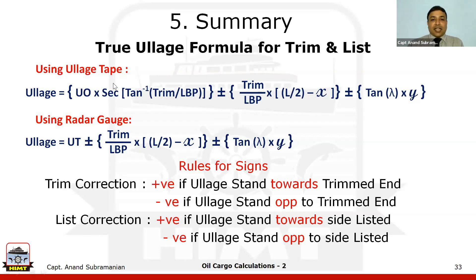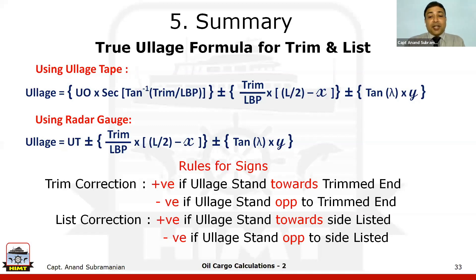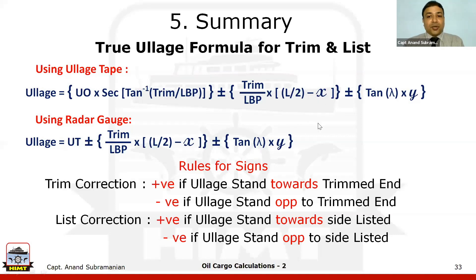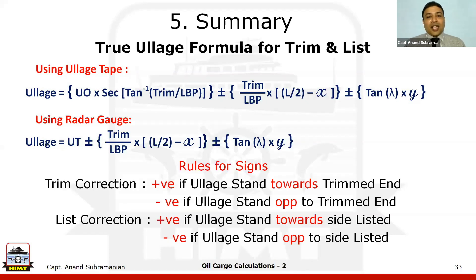In the examination, you can directly apply the formula without extensive explanation, though drawing a small diagram is recommended to show that you understand the concept. The value of X is the distance of the ullage point from the aft bulkhead, and Y is the distance from the tank centerline — both are given in each numerical. These values change with each problem. The formulas, while appearing complex, are simpler than stability or navigation formulas once you practice two or three numericals.